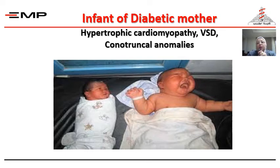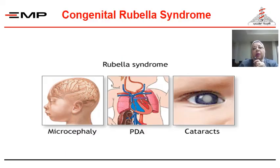Congenital rubella syndrome is one of the most severe syndromes due to congenital rubella. In this syndrome, the patient may have microcephaly, patent ductus arteriosus, and cataracts.